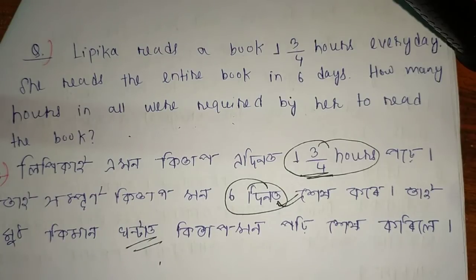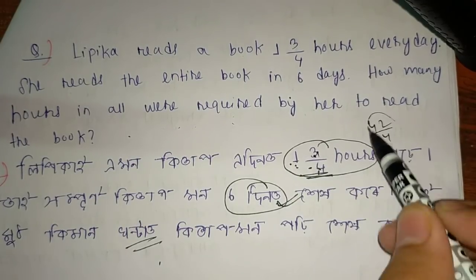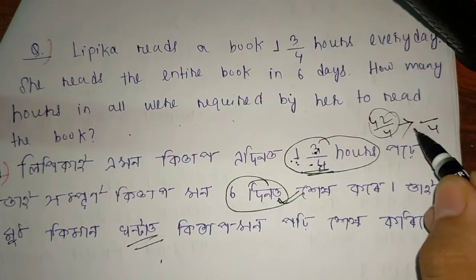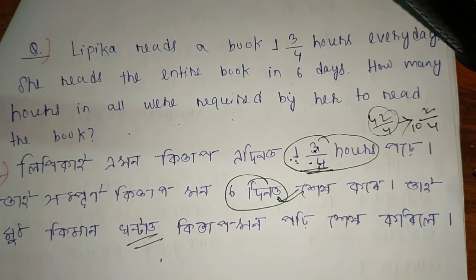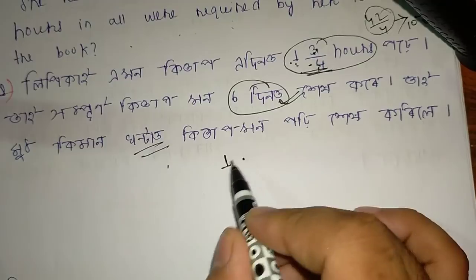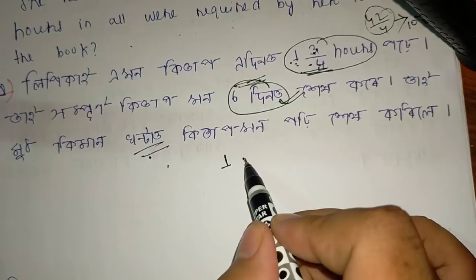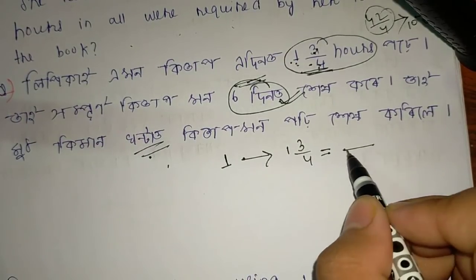So the concept here involves mixed fractions. We need to know how to work with mixed numbers. 1 and 3/4 hours is a mixed fraction. We need to convert it to an improper fraction to multiply.